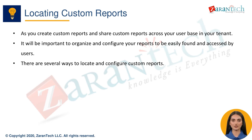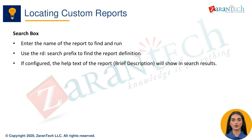One way to locate and configure custom reports is to use the search box on the home page. You can enter the name of the report you want to find and run. Use the RD prefix to search for the report definition instead of just the report output. If you have configured the brief description for the report, that also shows up in search results, making it easier to find the right report.